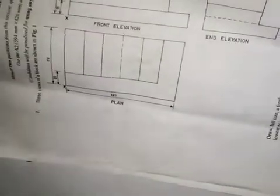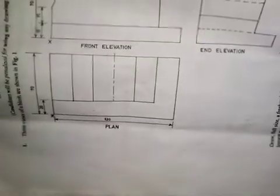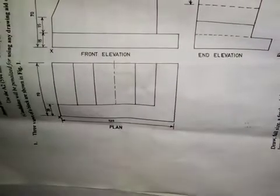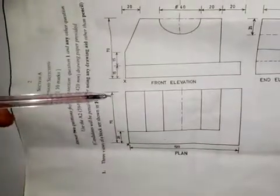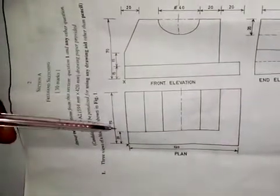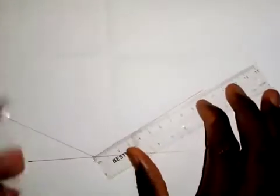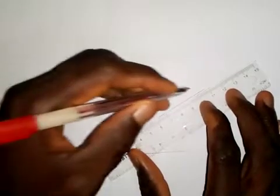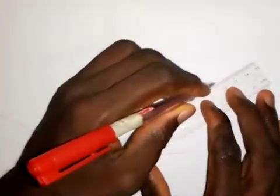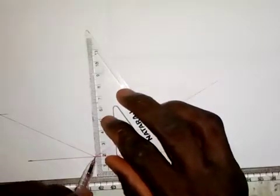The next thing to do is to take a measurement of 120 to this side. The distance from here to here is 70 — that is in the plan. So I will take a measurement of 120 millimeters to this side. From point X, take 120 millimeters. So I'm going to draw a short vertical line here like this.